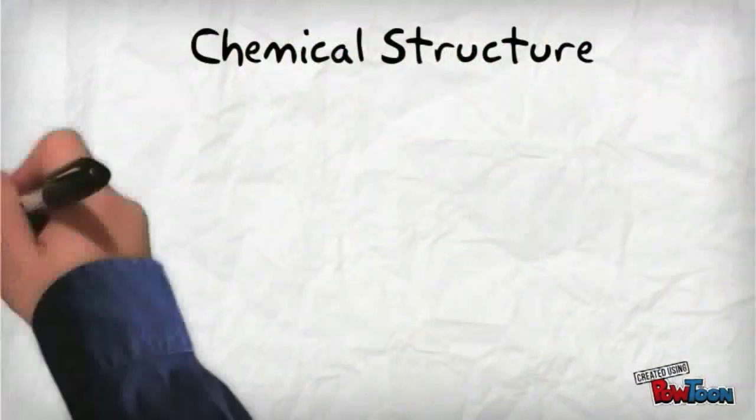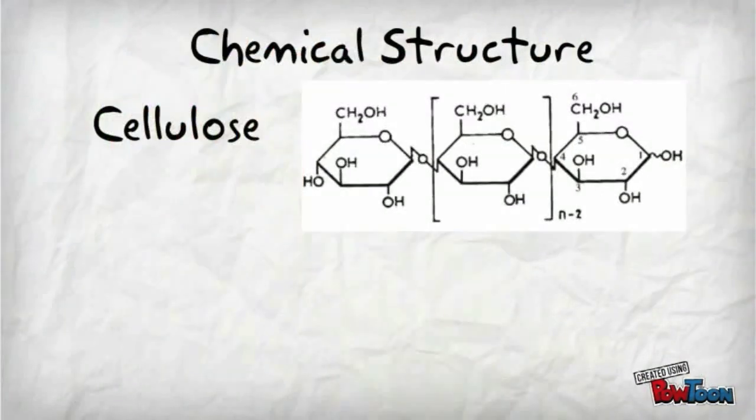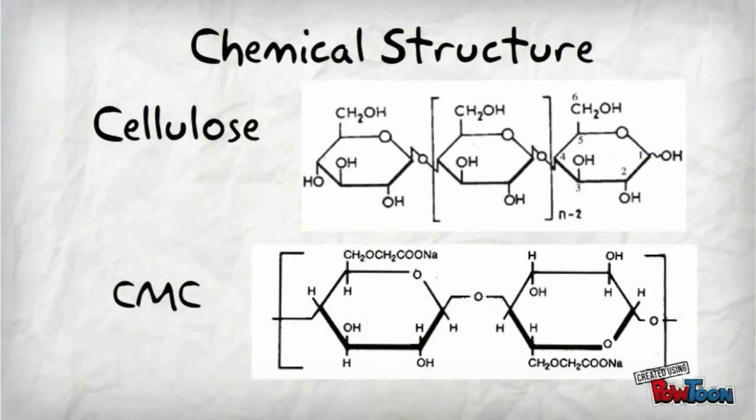Chemically, the structure of CMC is very similar to that of cellulose. Cellulose contains three hydroxyl groups attached to a glucose unit, whereas in CMC, a carboxymethyl group substitutes one of the hydroxyl groups. This CMC molecule has one degree of substitution. If the remaining two hydroxyl groups are also substituted, the degree of substitution would be three.